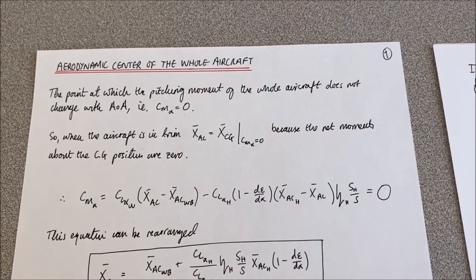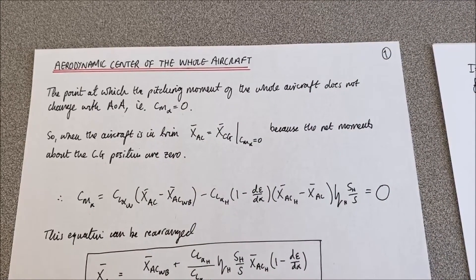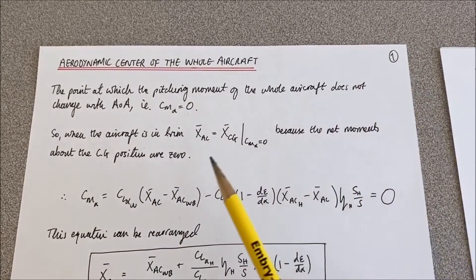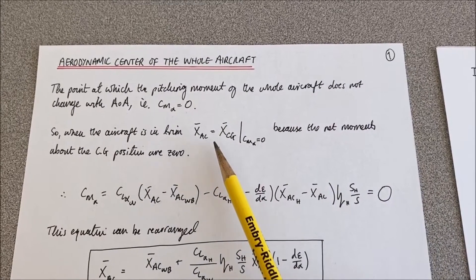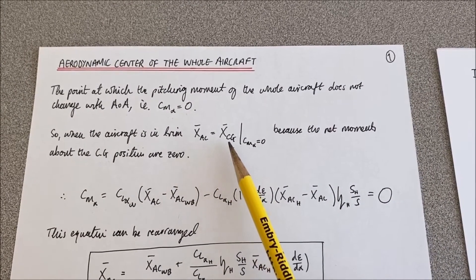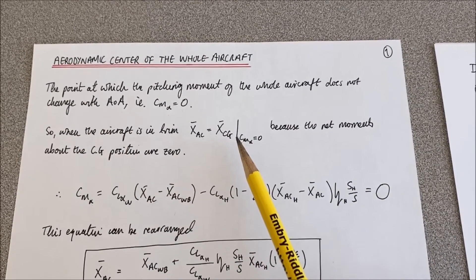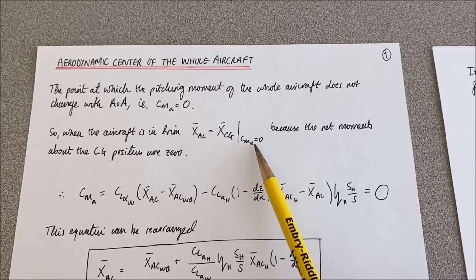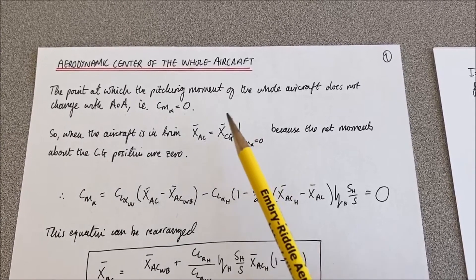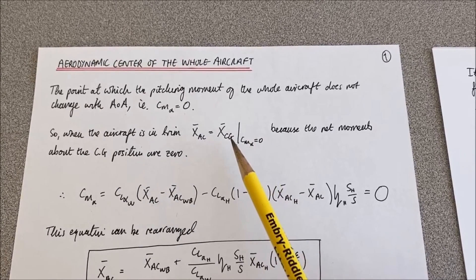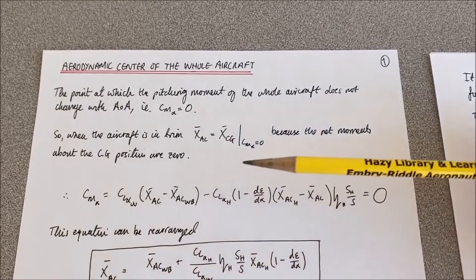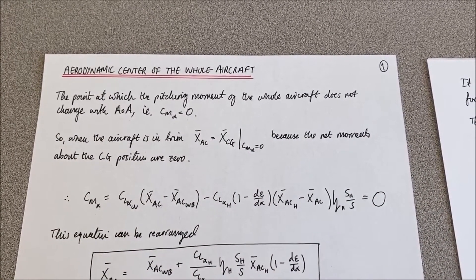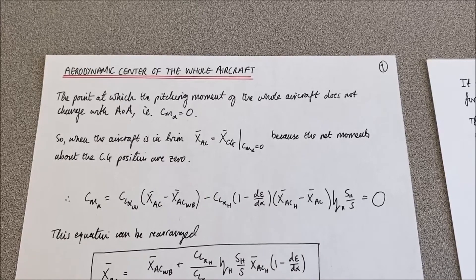When the aircraft is in trim, the aerodynamic centre of the whole aircraft is at the centre of gravity position when the pitch moment coefficient with respect to alpha is zero, because net moments about the centre of gravity position are zero. So in a trim condition, the aircraft is not pitching nose up, neither is it pitching nose down.